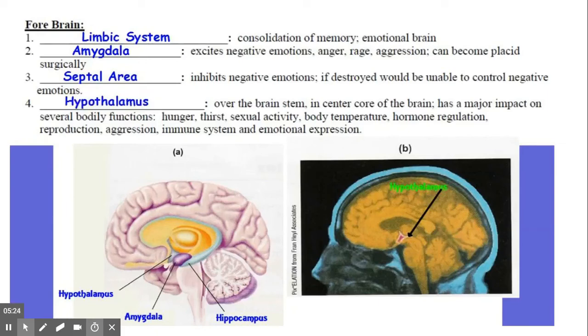And then your fourth item here is your hypothalamus. The hypothalamus is just over the top of the brainstem, as you can see labeled in both diagrams, in the center core of the brain. It has a major impact on a lot of our bodily functions. The prefix hypo, like hypodermic, because it's testing our blood and helps us understand when we're hungry or thirsty. It's involved in sexual activity, body temperature, hormone regulation, reproduction, aggression, immune system responses, and emotional expression.